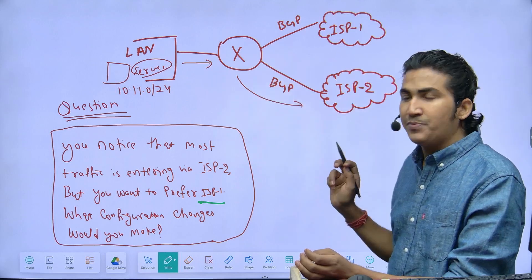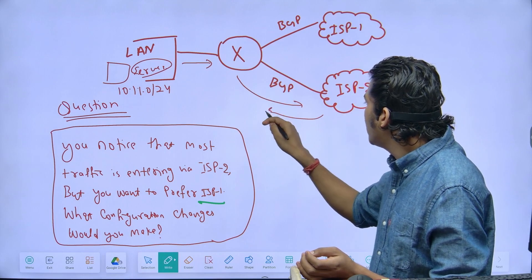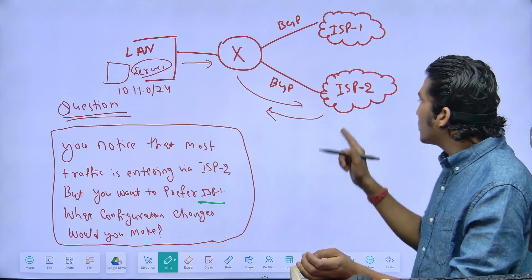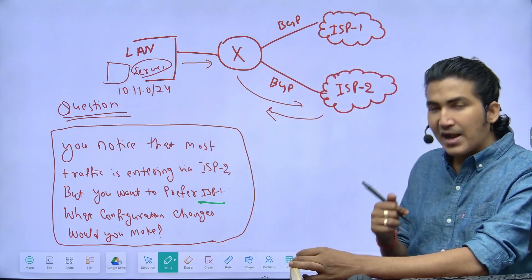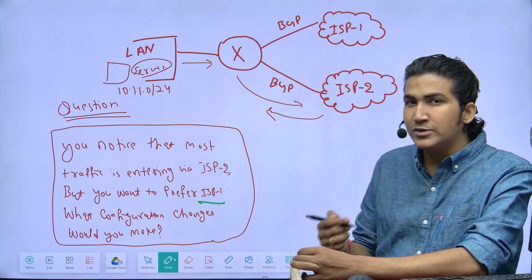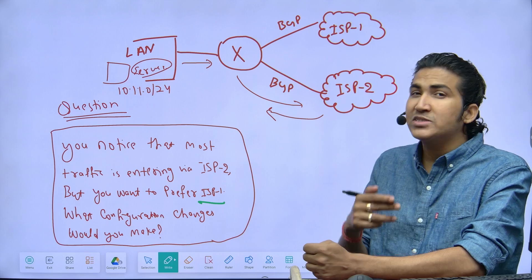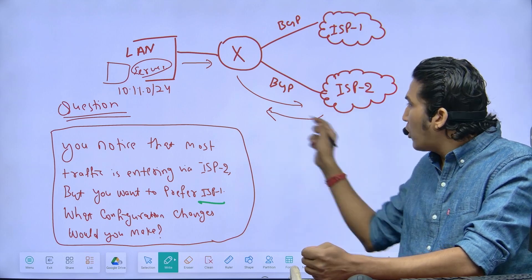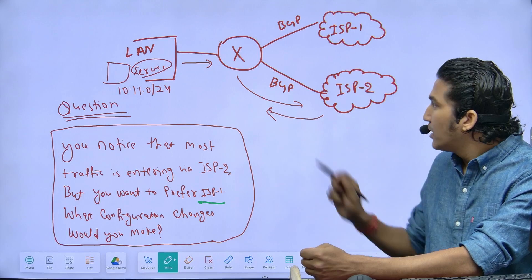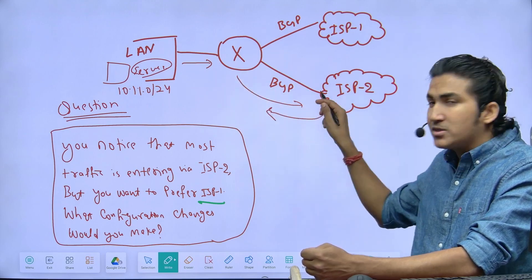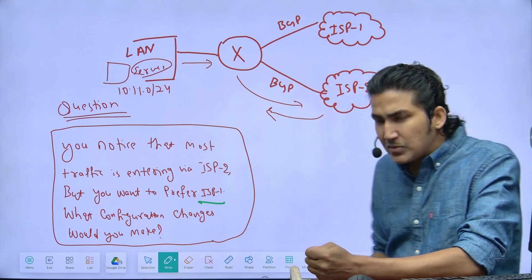Only when the ISP has the route can it forward traffic to this subnet. So the route goes from router to ISP, and traffic comes from ISP to router. For inbound traffic, we are going to manipulate the path using BGP attributes applied in the outbound route direction.